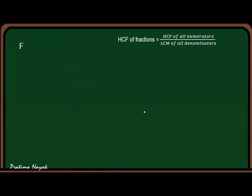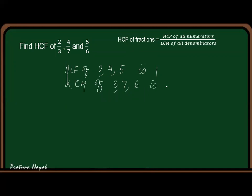Now let us take three fractions: 2/3, 4/7, and 5/6. So first I'll get HCF of 2, 4, 5. HCF of 2, 4, 5 is again 1. And LCM of 3, 7, 6. We'll take LCM of 3, 7, 6. It will be 42.